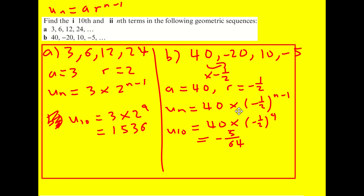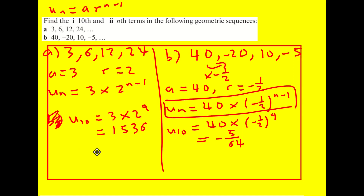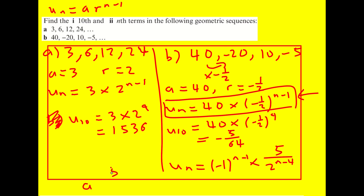In the model answers they manipulate the nth term into the form (−1)^(n−1) × 5 / 2^(n−4), by writing 1/2 as 2^(−1) and separating the bracket and the 40. Personally I think the form 40 × (−1/2)^(n−1) is clearer. If you're asked to write it in a specific form like a × 5 / 2^p, then you'd need to do this manipulation — but the main thing is finding the nth term.